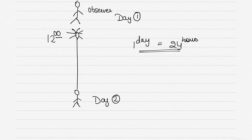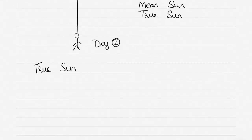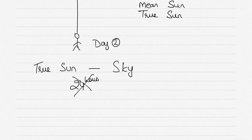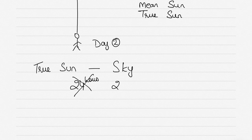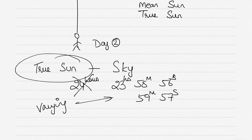Now that is not entirely true. We have something called the mean sun and something called the true sun. The true sun is what we actually see in the sky — the real sun — and it doesn't take exactly 24 hours every day. Sometimes it takes 23 hours 58 minutes 56 seconds, or 59 minutes 57 seconds; the time keeps varying, so we cannot use the true sun as a means of timekeeping.